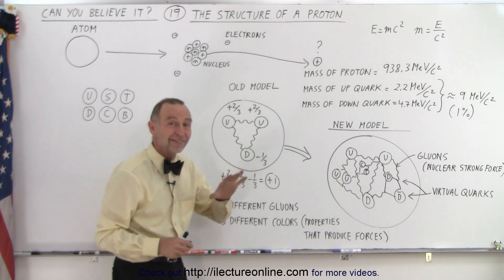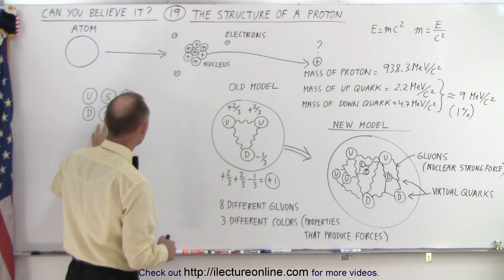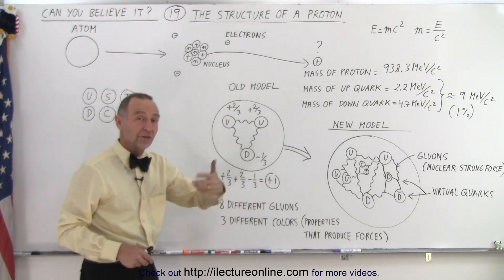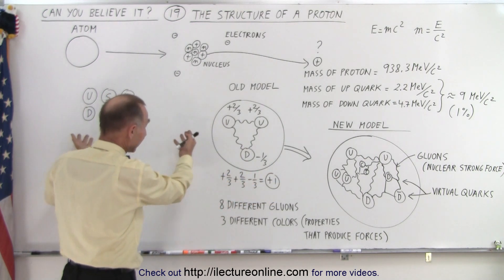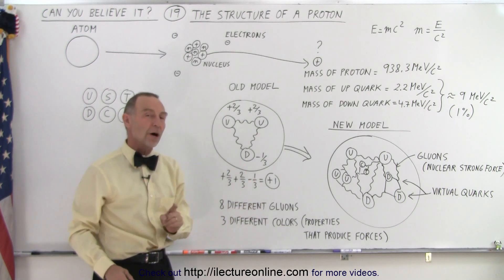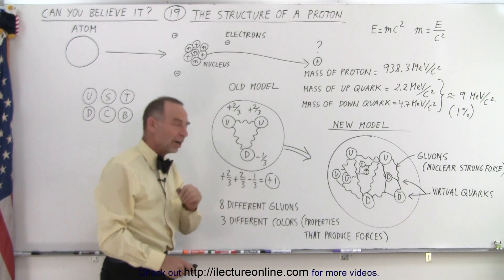Not only are there six different quarks, and of course, we have the six different anti-quarks. For every quark, there's an anti-quark. So, there's a total of 12 quarks. We also have eight different gluons, and we have three different colors.